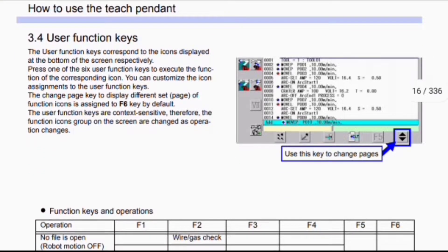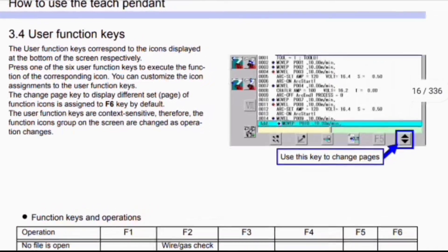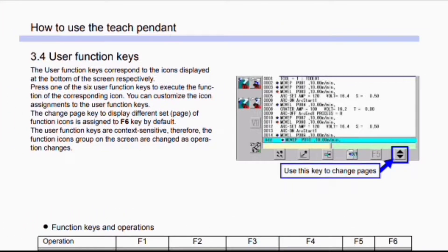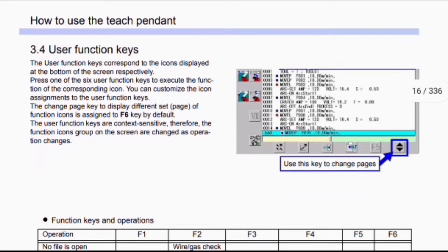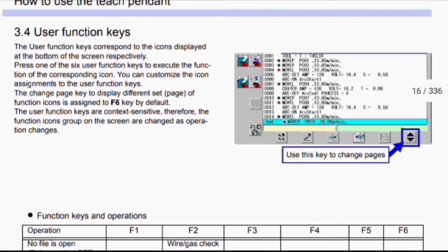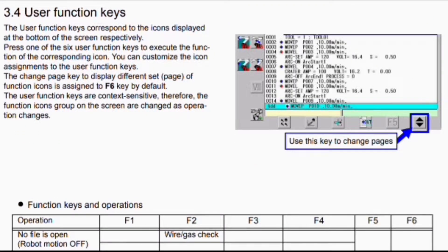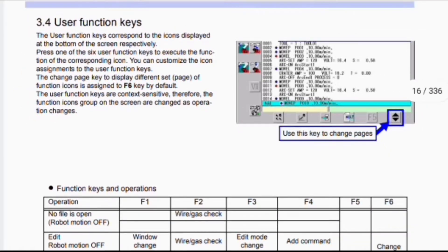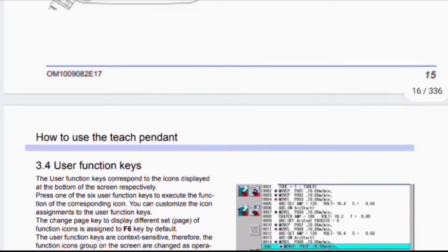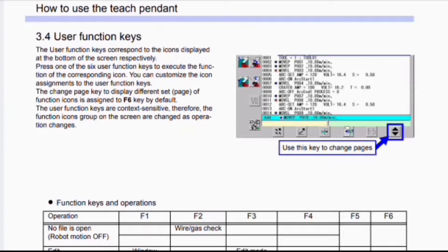Here we discuss user function keys of the teach pendant. The user function keys correspond to the icons displayed at the bottom of the screen. Press one of the six user function keys to execute the function of the corresponding icon. You can customize the icon assignments to the user function keys. The change page key, which displays different sets of function icons, is assigned to the F6 key by default. The user function keys are context sensitive, so the function icon groups on the screen change as the operation changes. Use this key to change pages in the blue frame.